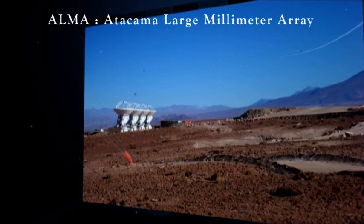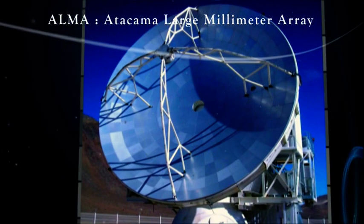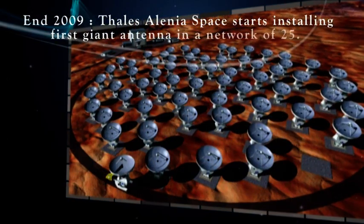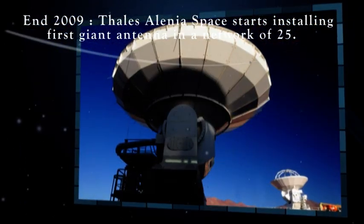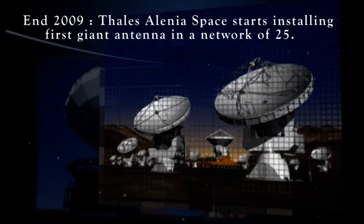ALMA is one of the largest ground-based astronomy networks of the next few years. Leading the consortium, Thales Alenia Space will start installing 25 giant antennas in the Atacama Desert by the end of 2009.